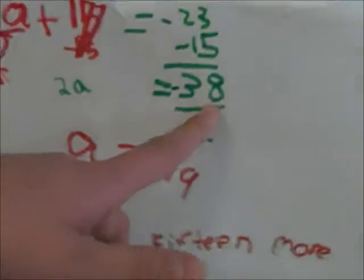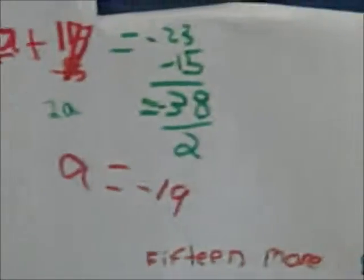So then you divide this by 2, and since you divide this side by 2, you have to divide this side by 2 as well. Negative 38 divided by 2 equals negative 19. So, a equals negative 19.